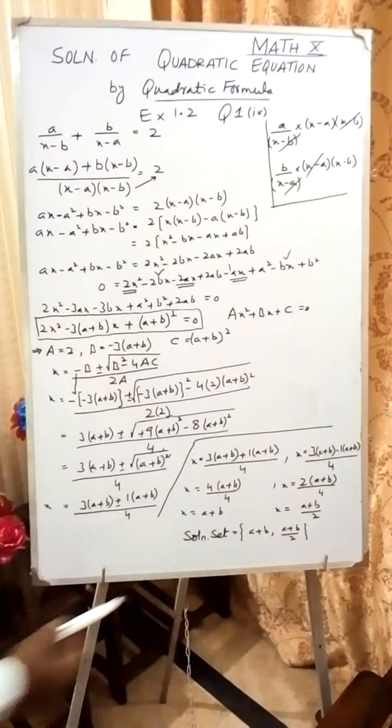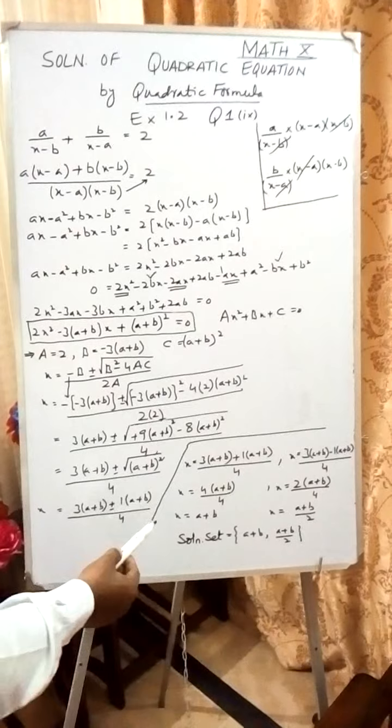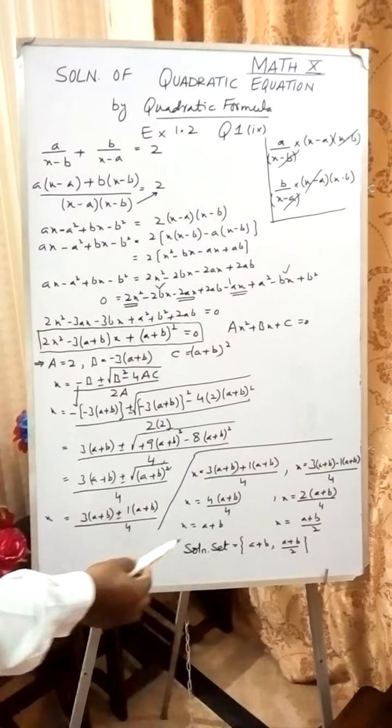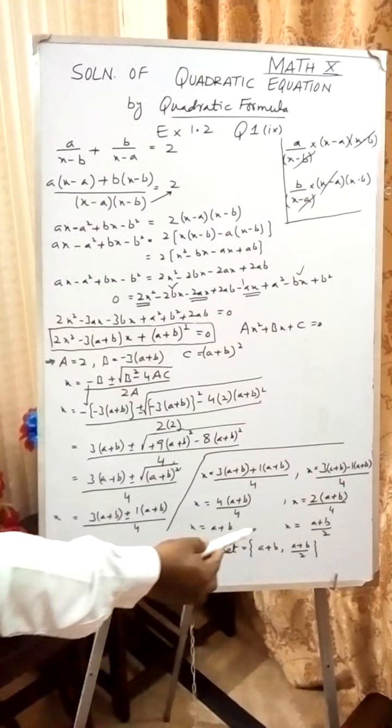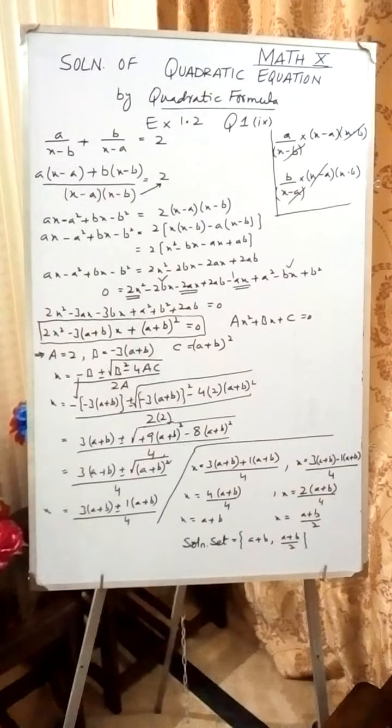So in this way you will get two values of x. The first value will become x = a + b. The other value will become (a + b)/2, or you may write ½(a + b). So this will be the solution set.